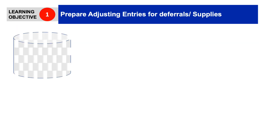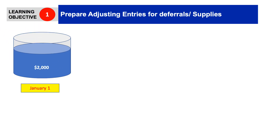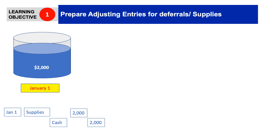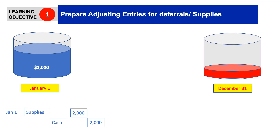Let's take another example about supplies. On January 1, I bought supplies worth $2,000. Back then I did the journal entry: debit supplies for $2,000 and credit cash for $2,000. At the end of my accounting period, I checked my supplies and found that I have supplies worth $500 on hand, which means there is a difference between what I had and what I still have. This difference is the supplies expense.